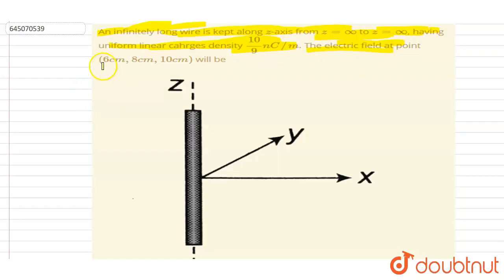Electric field at point (6, 8, 10) will be? So if I talk about the direction of electric field, if you see from the top, it will be radially outward.